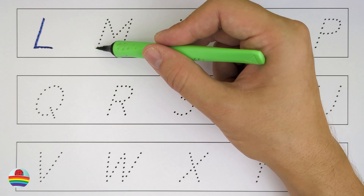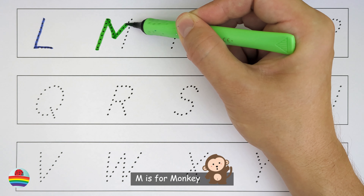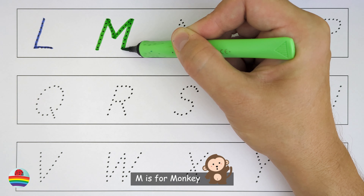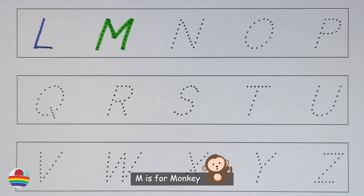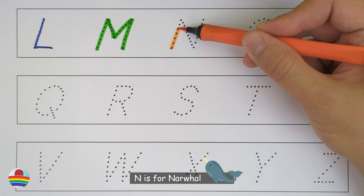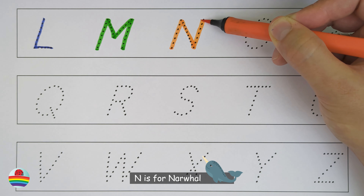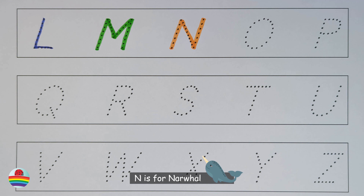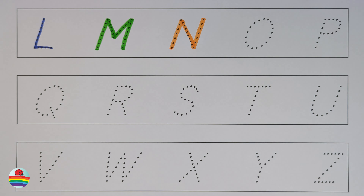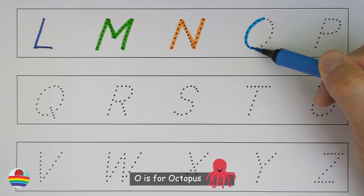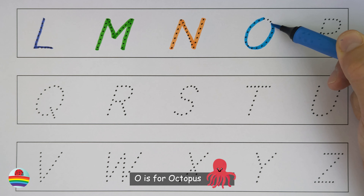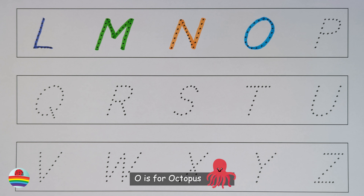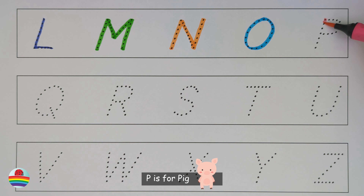M. M is for monkey. N. N is for narwhal. O. O is for octopus.